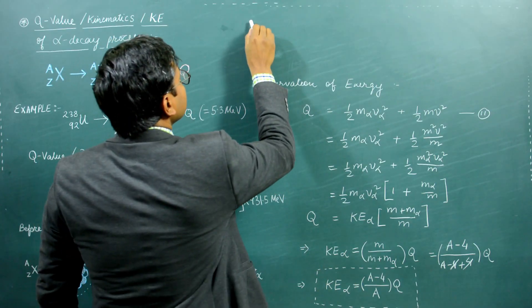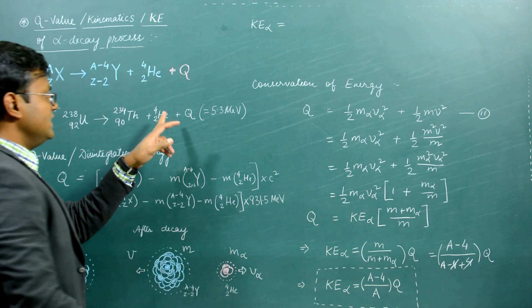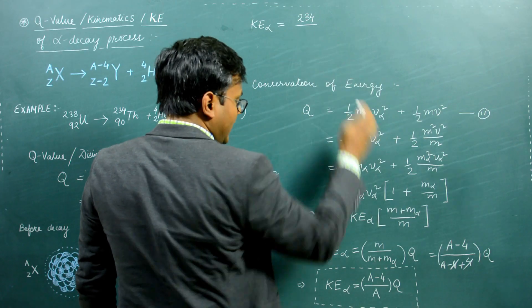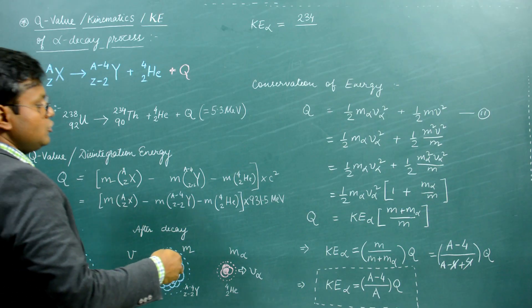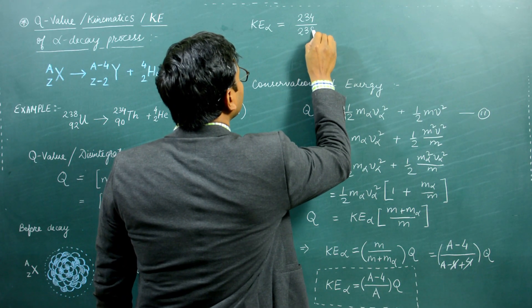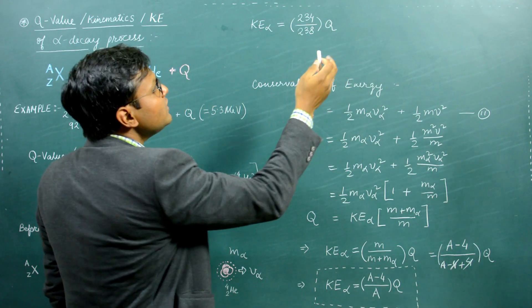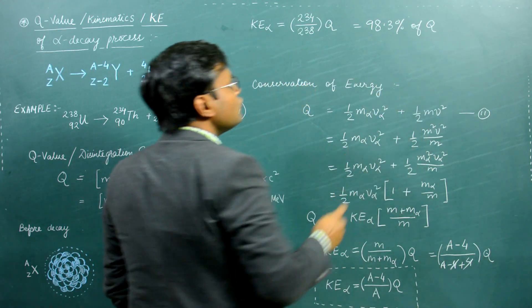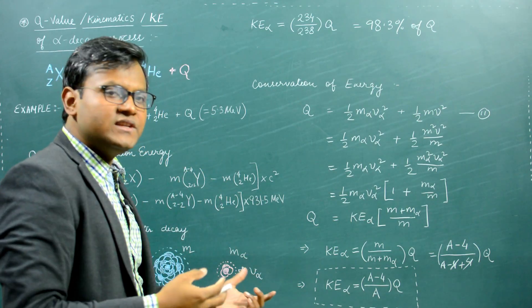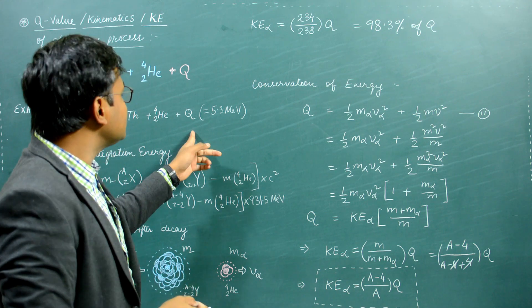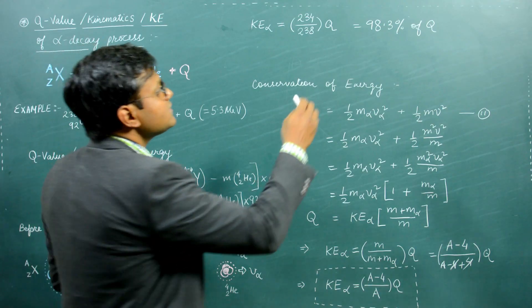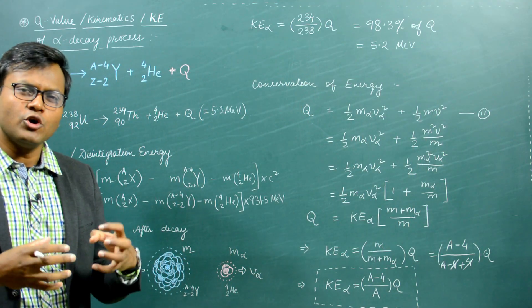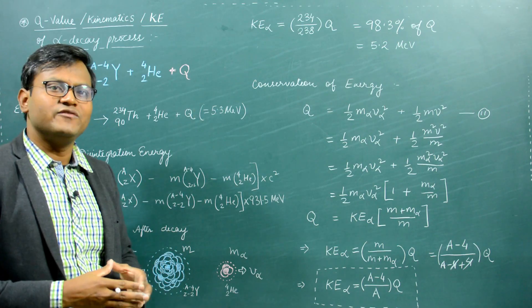For uranium-238, the kinetic energy of the alpha particle is calculated as (A − 4)/A times Q: here A minus 4 is 234 and A is 238. This gives 234/238 times the Q value, which is approximately 98.3% of Q — about 5.2 mega electron volts. So in alpha decay, roughly 98% of the total disintegration energy goes off as kinetic energy of the alpha particle.